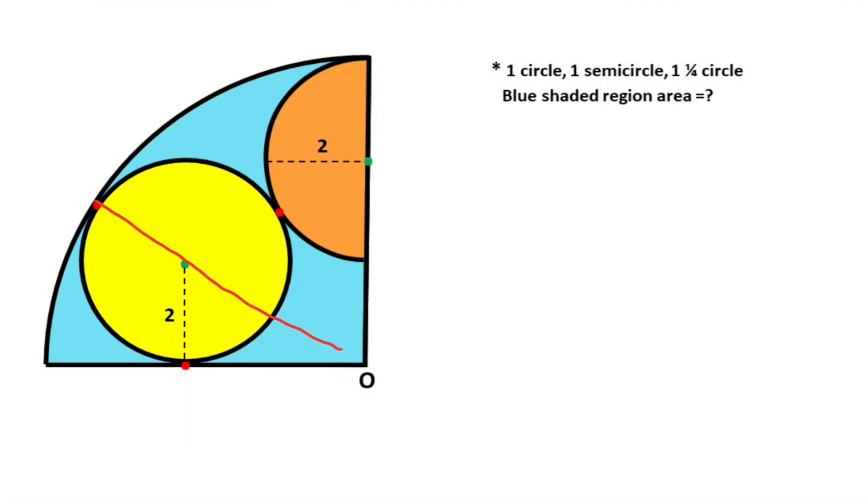this line must be linear, right, because of tangent. Likewise, if we connect these three points, this line is also linear because of tangent. We know that this length is two, right, because of radius. Here is two, here is two, and this length is also two units.